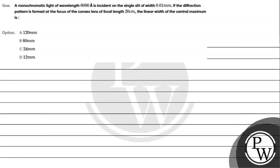Hello, this is the given question. The question says a monochromatic light of wavelength 6000 angstrom is incident on a single slit of width 0.101 mm.